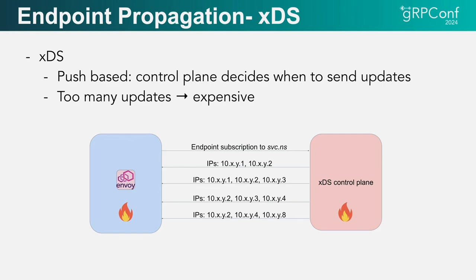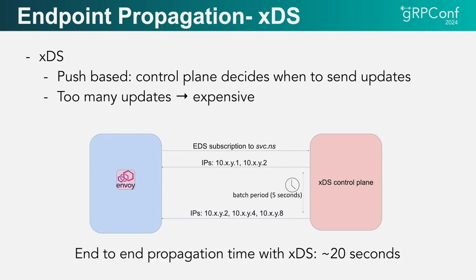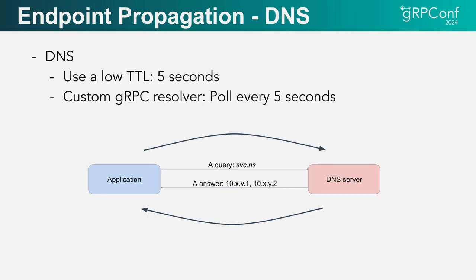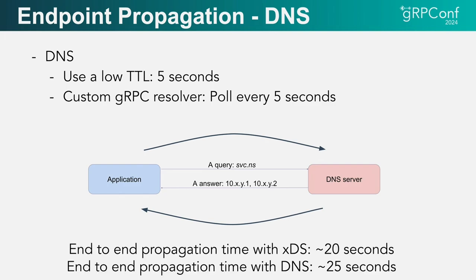It turns out that when there are a lot of endpoints churning — which typically happens in deployment, sometimes we have 10,000 pods rolling at the same time — if you're pushing every single update, you're going to burn the control plane and the data plane. So you have to introduce some form of batching to make that more efficient, which introduces a new delay. With this batching in place and the rest of the overhead in the system, we landed at around 20 seconds for propagation time. Because we controlled the whole DNS stack, we were able to set really low TTLs and roll out some custom resolvers for gRPC that poll every five seconds, so DNS propagation was also quite acceptable — a bit longer than XDS.